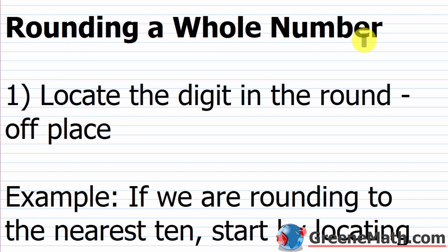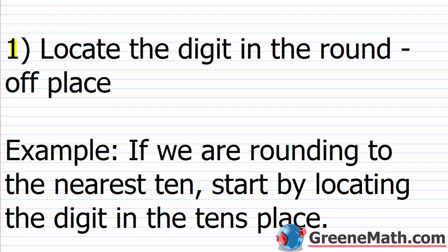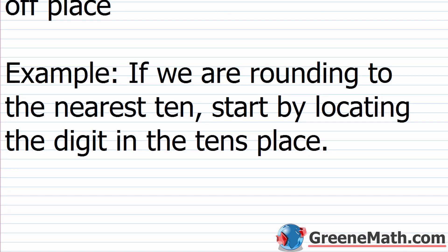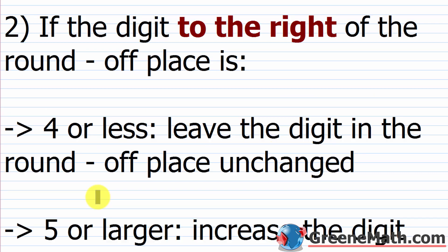When rounding a whole number, the first thing you want to do is locate the digit in the round-off place. For example, if we are rounding to the nearest 10, you would start by locating the digit in the tens place. When you first start out, I would circle that digit or highlight it to identify your round-off place.